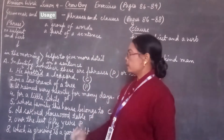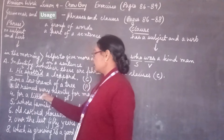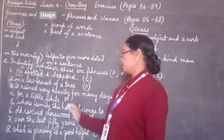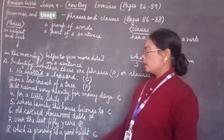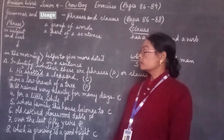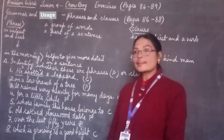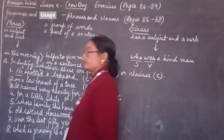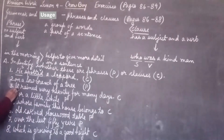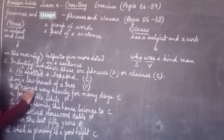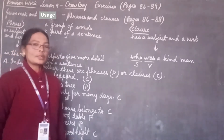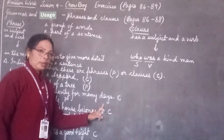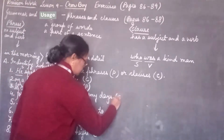In number 3 it is given: 'it rained very heavily for many days'. In this group, 'it' is our subject and 'rained' is our verb. That's why number 3 is our clause.